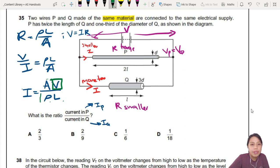Rho. Same material? Yeah. So it's the same. So what's changing? It's A and L only. Good. I like. So let's divide IP over IQ to find the ratio.